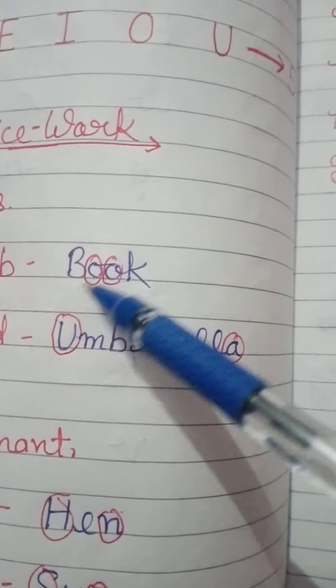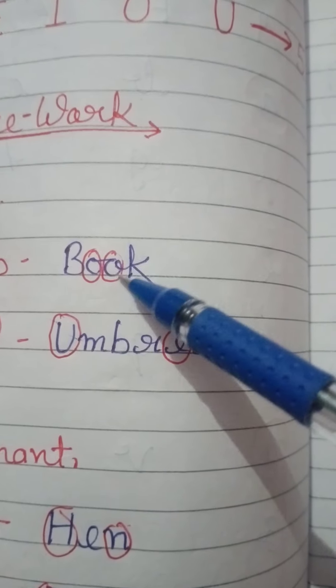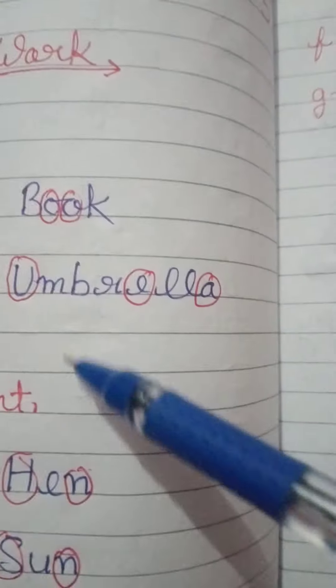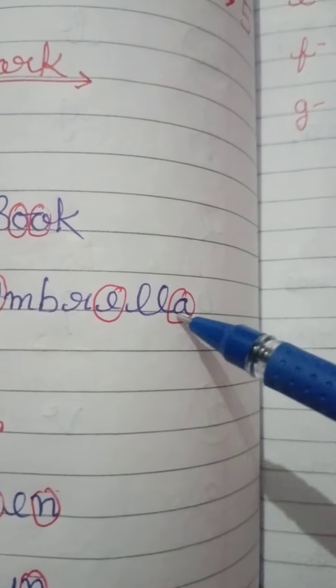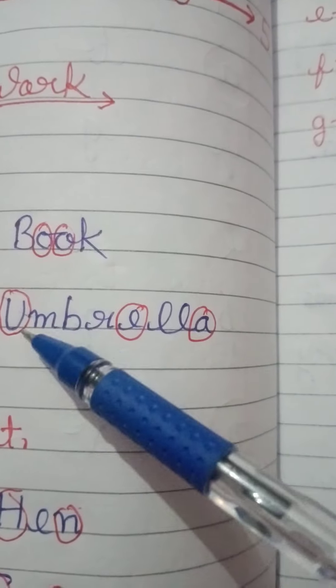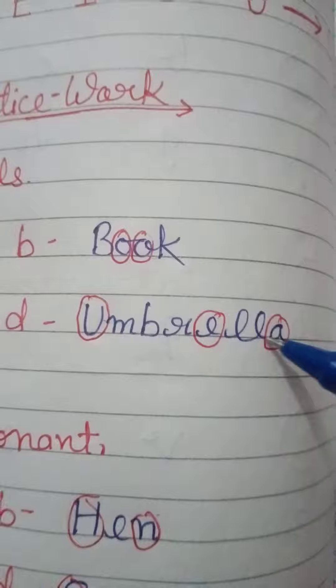Next, see book. In this, B and K are consonants, and double O is vowel. Umbrella: U, M, B, R, E, double L, A. In umbrella we have U, E, and A as vowels. These have been circled.